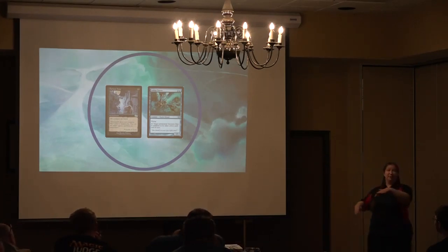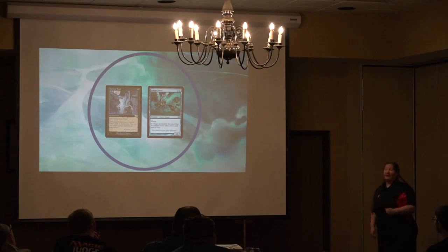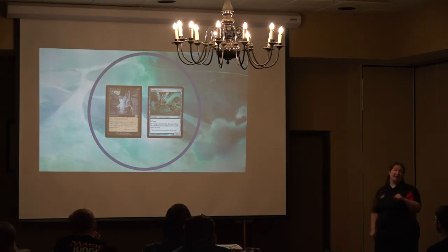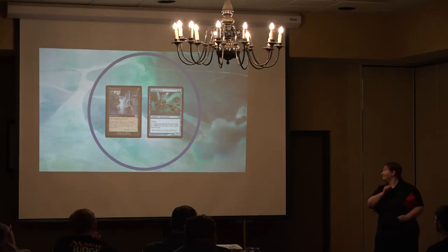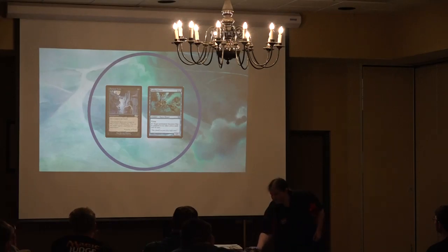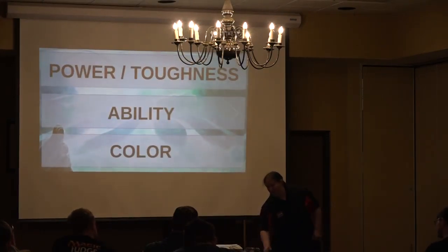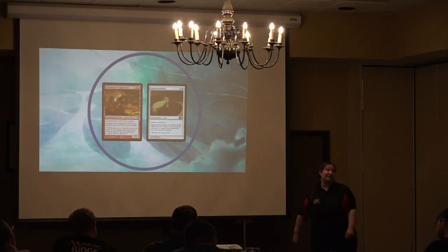If you have two permanents on the battlefield and you made something into a blue creature until end of turn, and then after that you play Darkest Hour — Darkest Hour has the newer timestamp. So first it's blue, then it's black, and the black removes the blue. So if it was a white permanent to start out with, an effect would make it blue and white, and then Darkest Hour comes along and says nope, now you're just black.